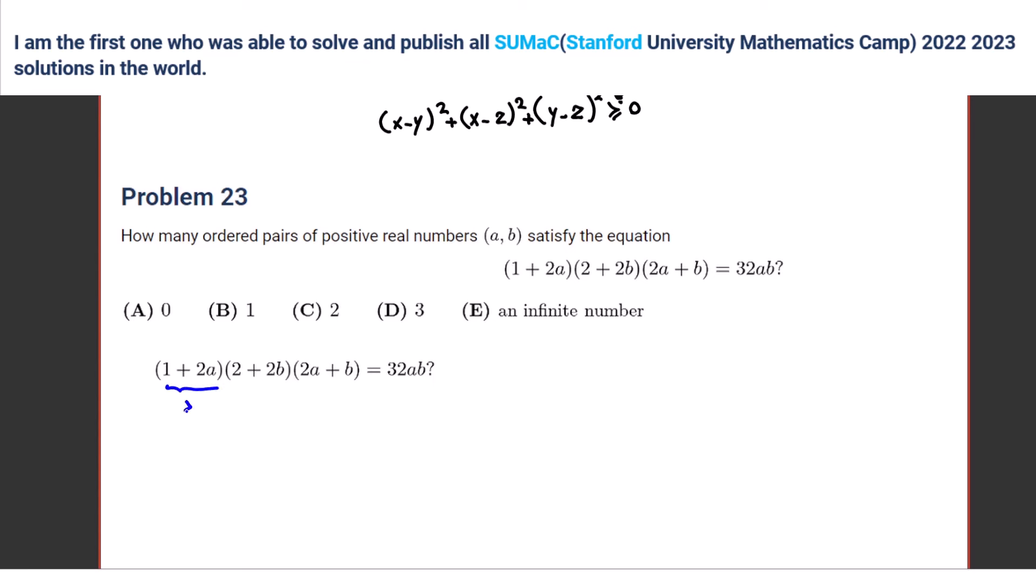It's (1 + 2a) is greater than or equal to 2√(2a). Exactly. What about the next bracket? (2 + 2b) is greater than or equal to 4√b. And the last part? Greater than or equal to 2√(2ab). Yes.